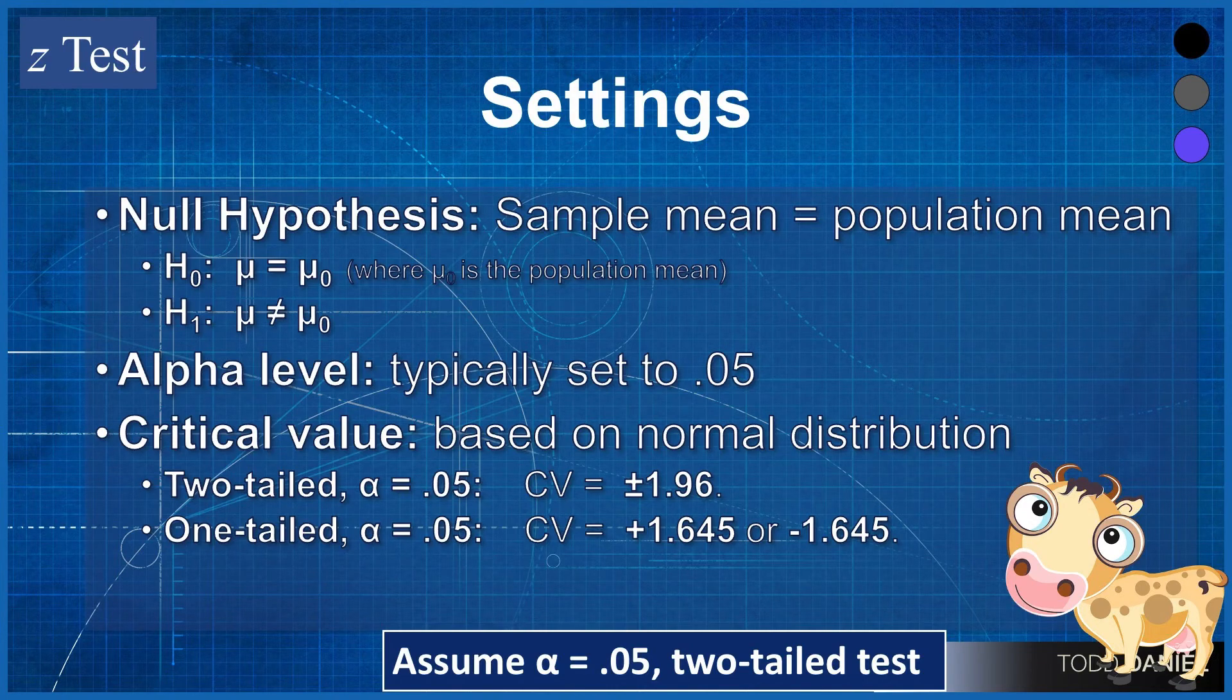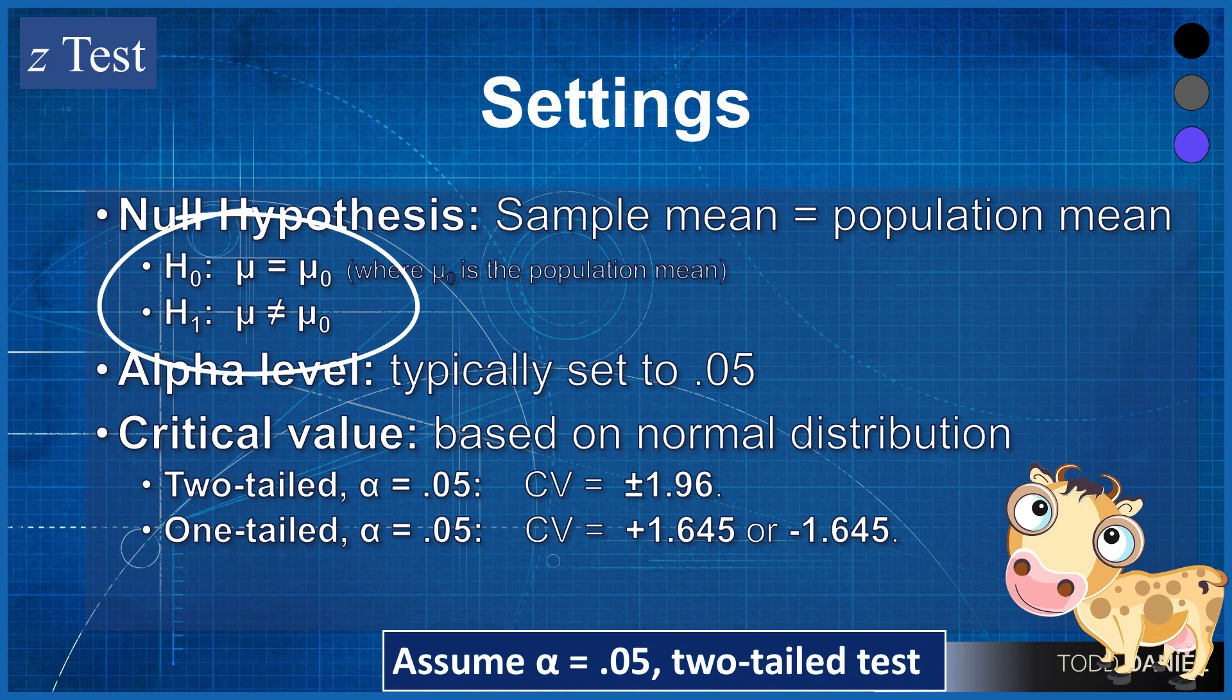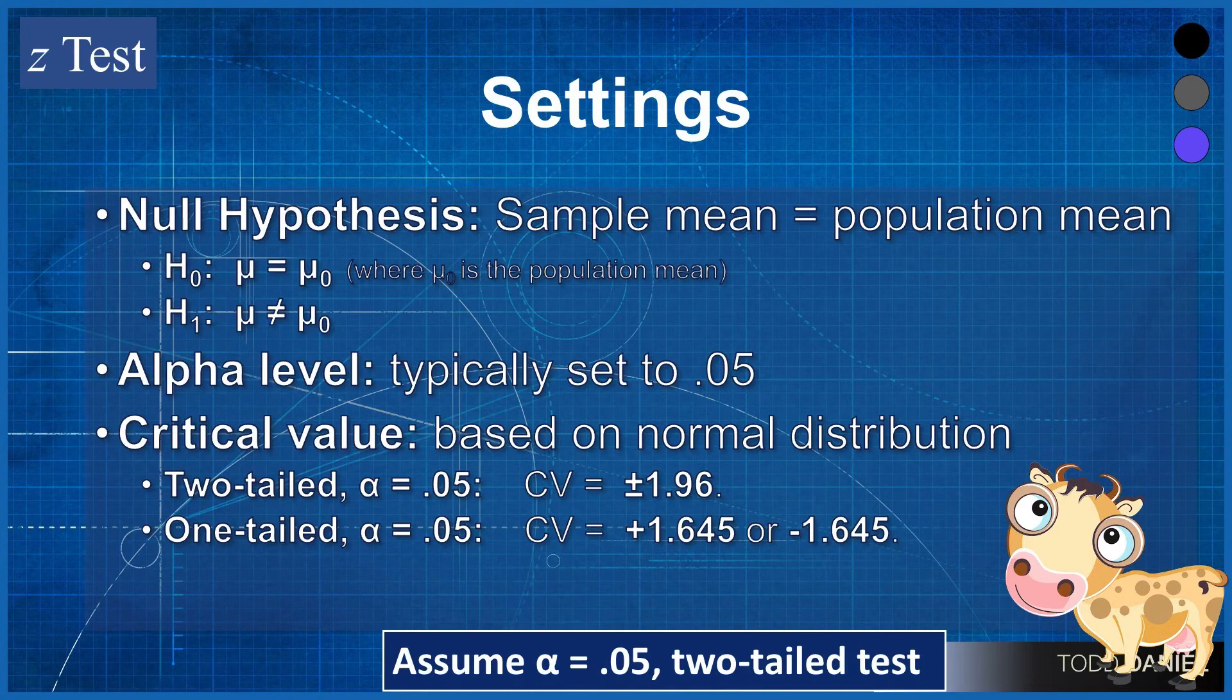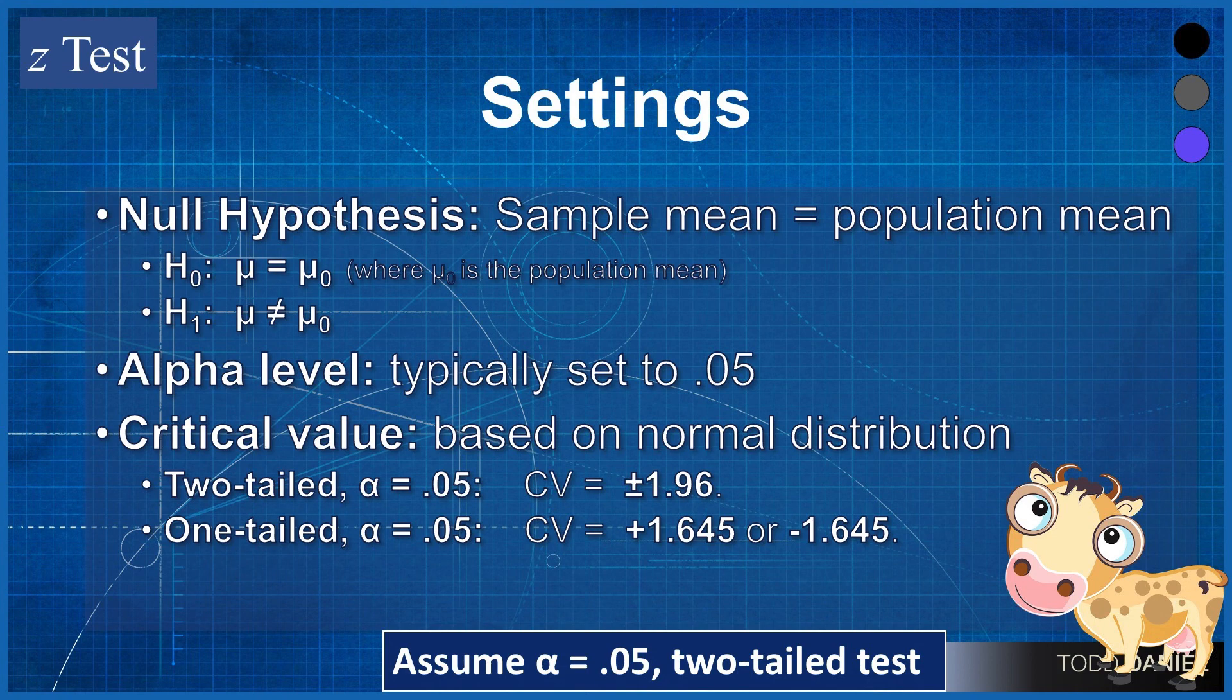The settings that we'll want to be aware of for the null hypothesis, in words we would say that the sample mean is equal to the population mean, and in symbols we would describe this as h₀: μ = μ₀, and where it says μ₀ that's where we're actually going to plug in a number which is the mean of the population. Our alternative hypothesis is h₁: μ ≠ μ₀, and again we'll plug in a number for that μ₀ value.